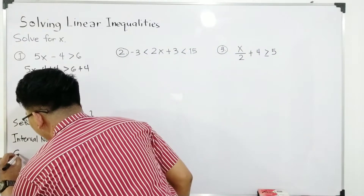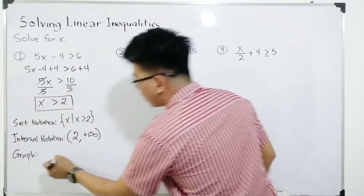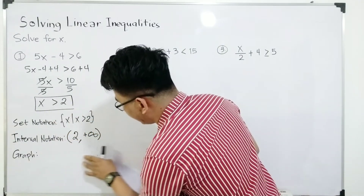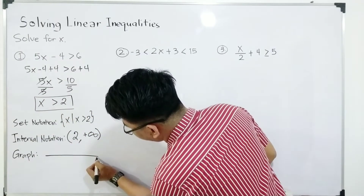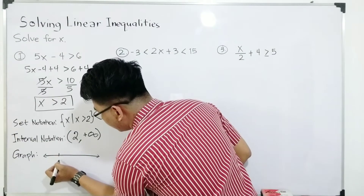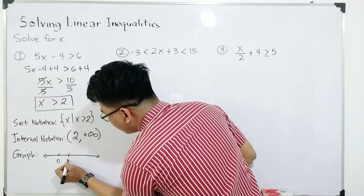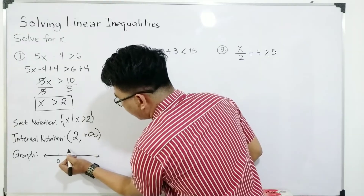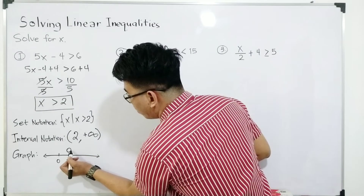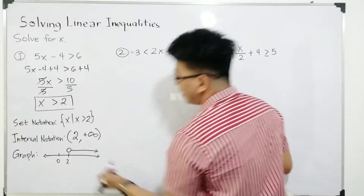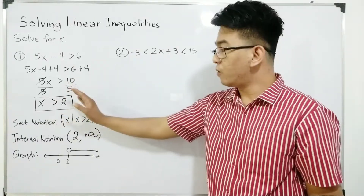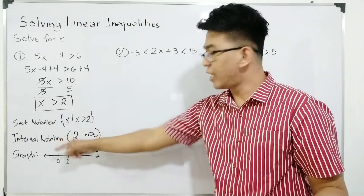Lastly, we have the graph. To graph this, we use a number line. Create a straight line and mark 0 and 2. Start with 2. Since 2 is not included, we use an open circle at 2. Since x is greater than 2, we go to the right side of the number line. And here are the possible representations of x is greater than 2 in set notation, interval notation, and graph. Now let's move on with item number 2.